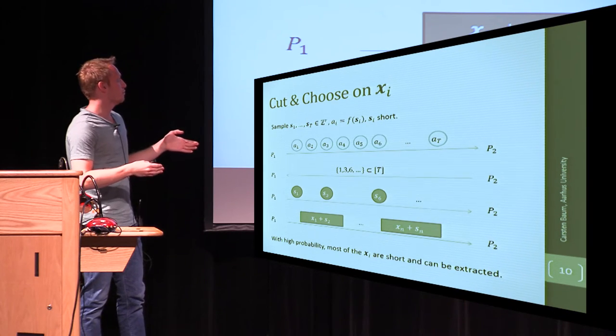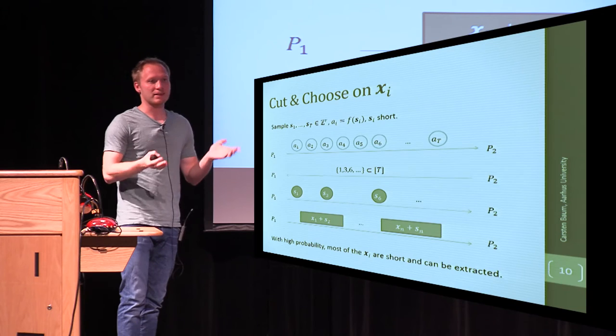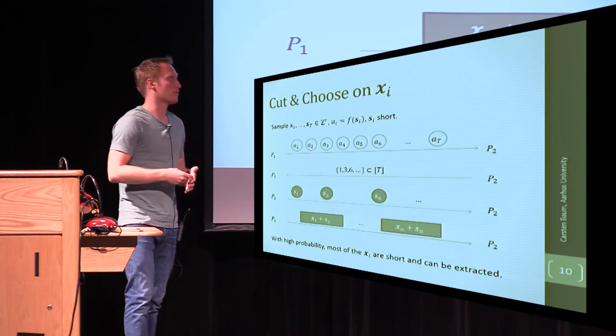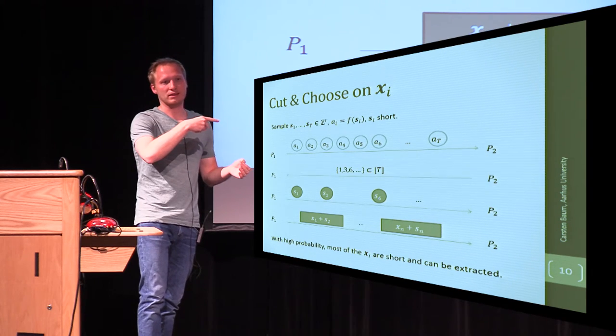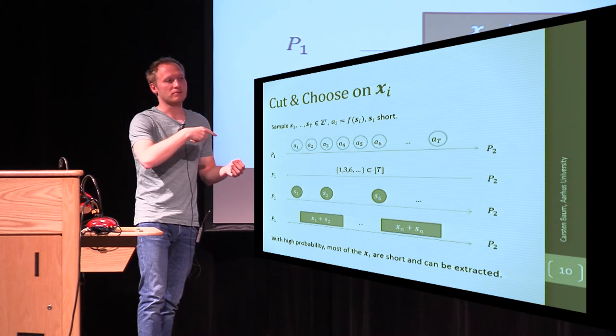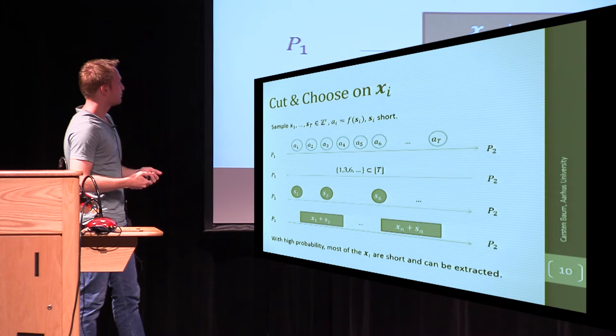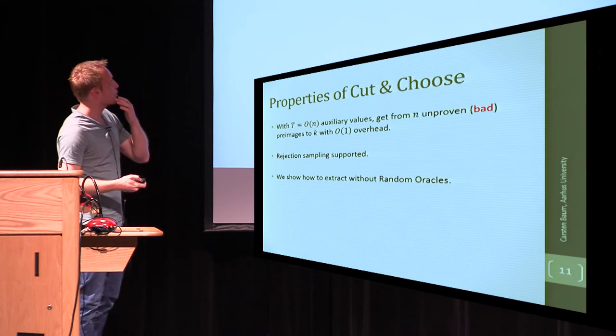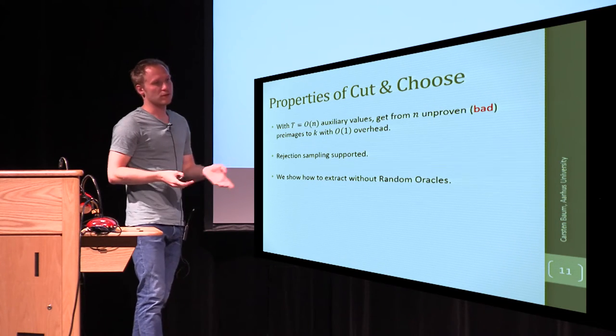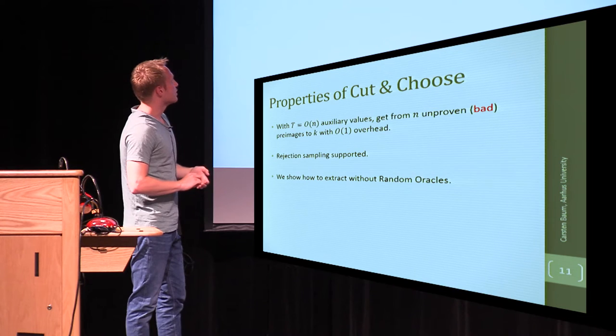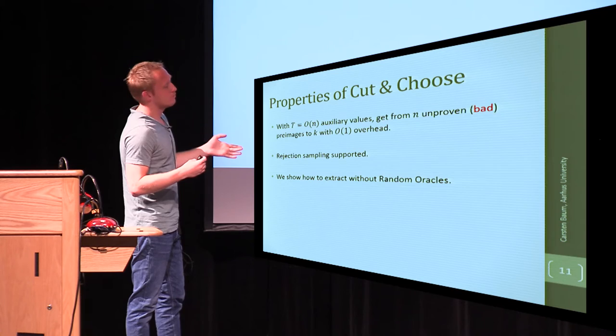So, basically, we do cut-and-choose on random values, but at the same time achieve a cut-and-choose effect on what we actually want to prove knowledge of. So, we start out by n values we want to prove knowledge of, and doing this, we get down to k that are still to be proven, where k is the statistical security parameter.